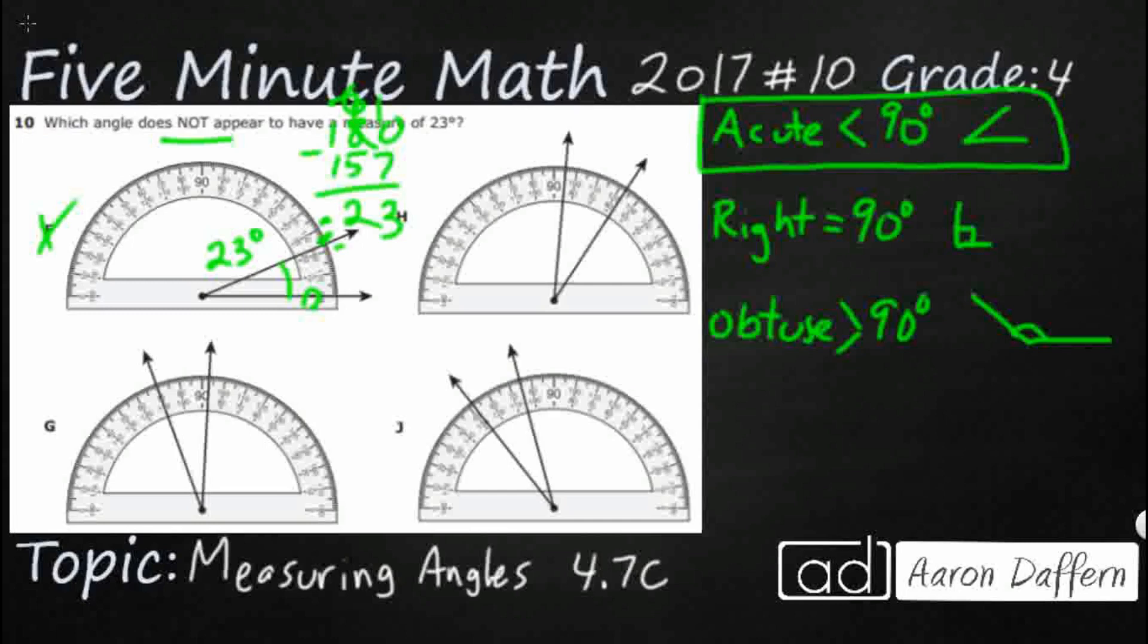So G is a little bit trickier because it doesn't start at a zero. But let's start with the outside right here. So I've got a 70. I'm going to take that 70, and it goes to 80, 90, and then a little bit past 90. So between 90 and right there is 95. So let's just call that 93. And yeah, that looks like another 23 degree angle.